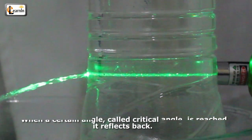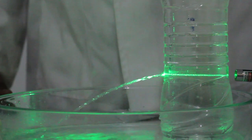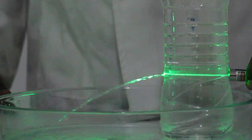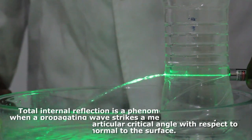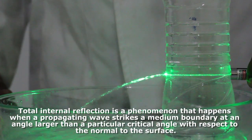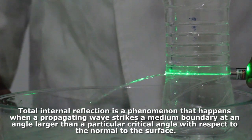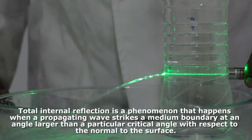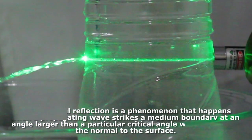The critical angle is the smallest angle of incidence for which light is totally reflected. Total internal reflection is a phenomenon that happens when a propagating wave strikes a medium boundary at an angle larger than a particular critical angle with respect to the normal to the surface.